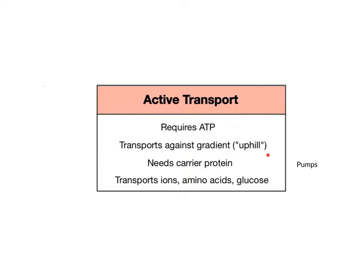Active transport is an uphill process where solutes move from an area of low concentration on one side of the cell membrane to an area of high concentration on the other side of the membrane. This movement can be in any direction, either into or out of the cell.